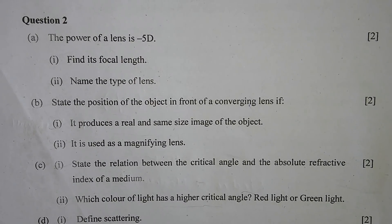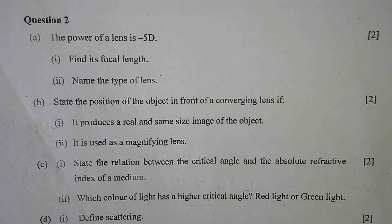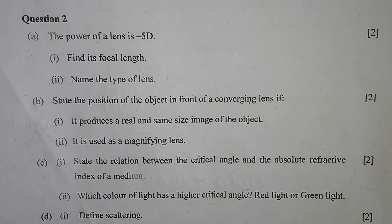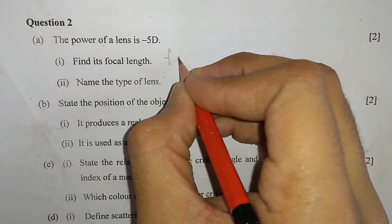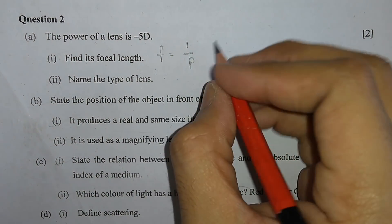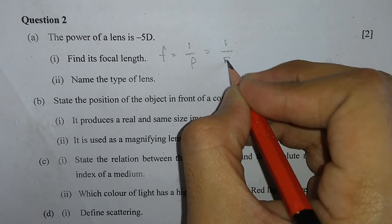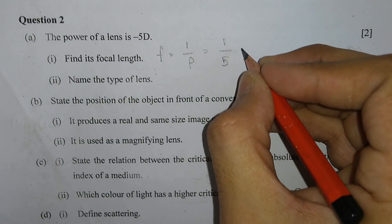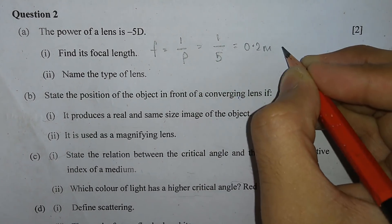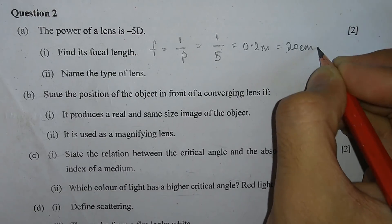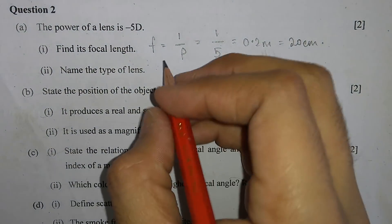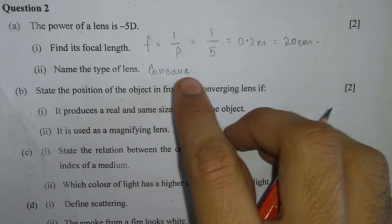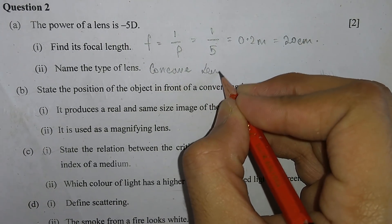Question 2, part A: The power of a lens is minus 5 dioptre. Find its focal length and name the type of lens. Focal length equals 1 divided by power, which is 1/5 = 0.2 metre or 20 centimetre. The type of lens is a concave lens, because a concave lens has power in negative.